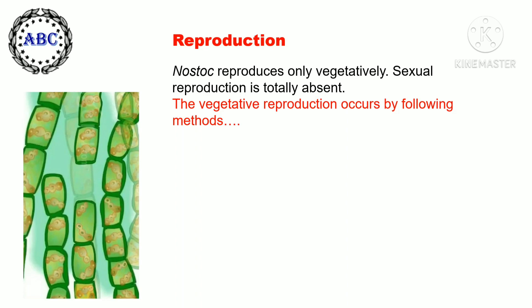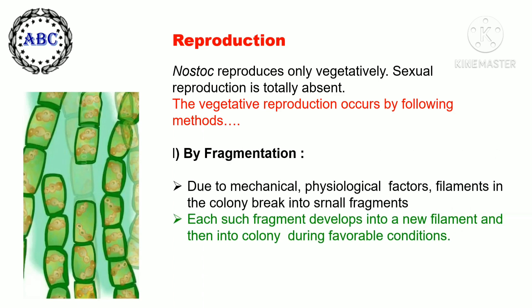Nostoc reproduces only vegetatively; sexual reproduction is totally absent. Vegetative reproduction occurs by the following methods. First, by fragmentation: due to mechanical or physiological factors, the filaments in the colony break into small fragments. Each such fragment develops into a new filament and then into a colony during favorable conditions.